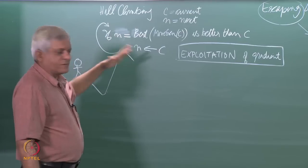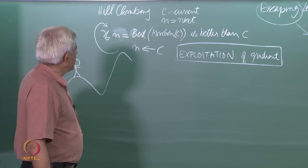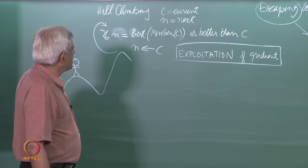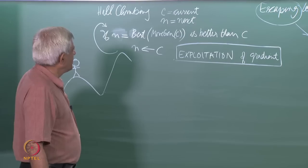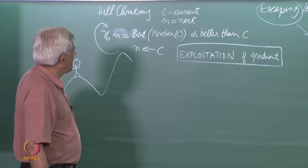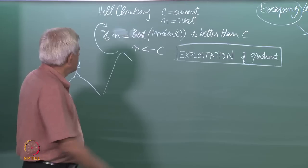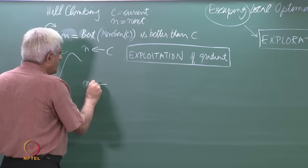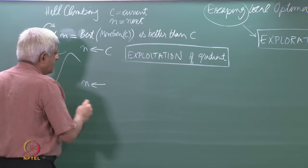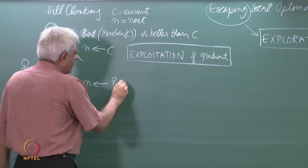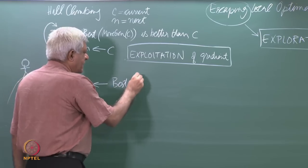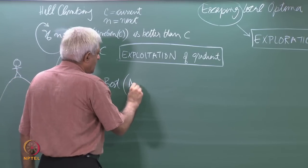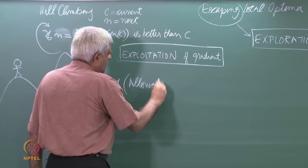So let us look at a variation of this algorithm which says that n will get the best as before, but we will introduce another feature which is 'allowable' or 'allowed'.